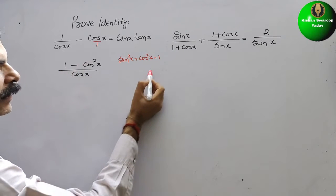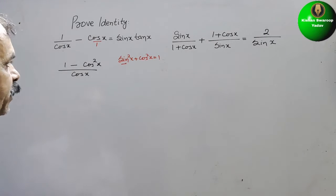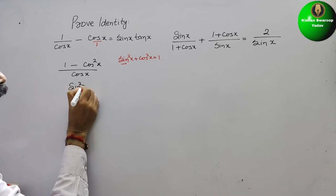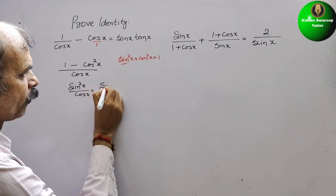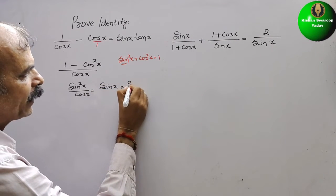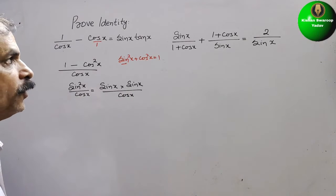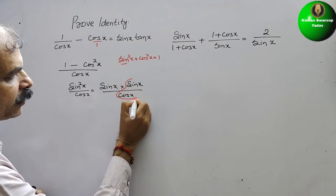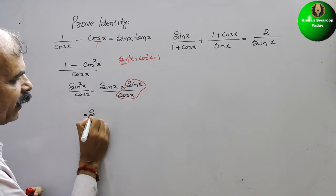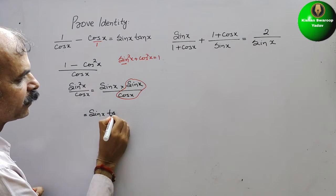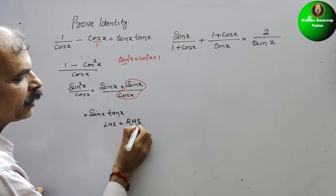They have given 1 minus cos square x. That means 1 is here and this will come to the right side as minus, so we get sin square x. So here it will be sin square x by cos x. sin square x means sin x into sin x by cos x. So this sin x by cos x will become tan x. So LHS and RHS are the same — LHS is equal to RHS.